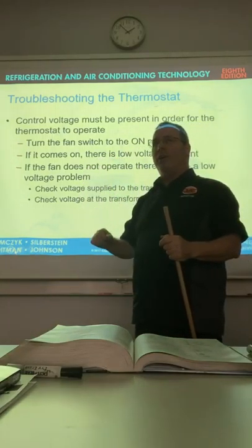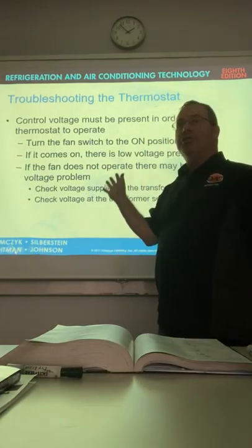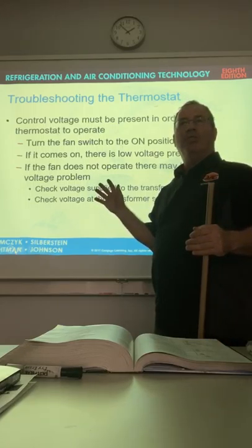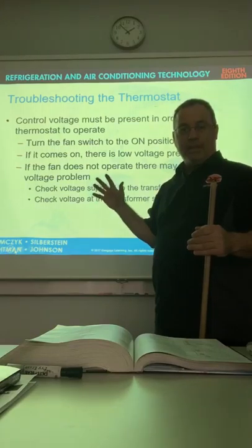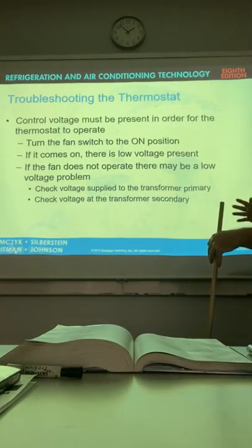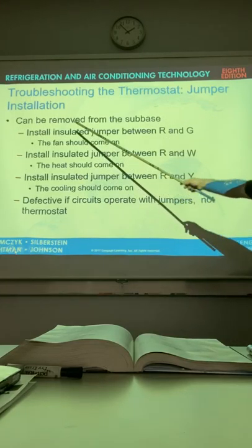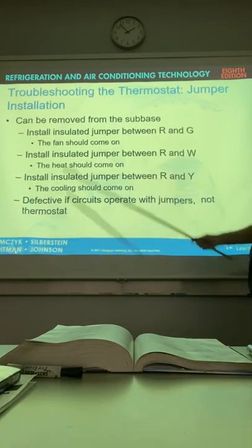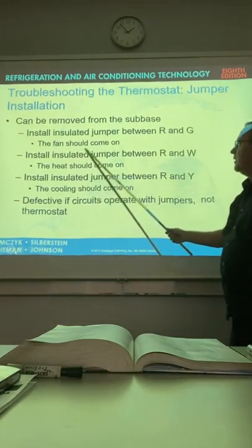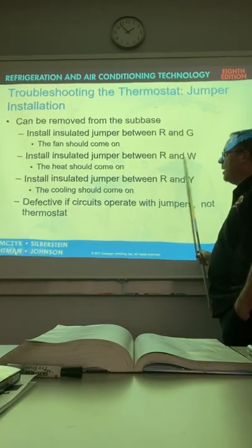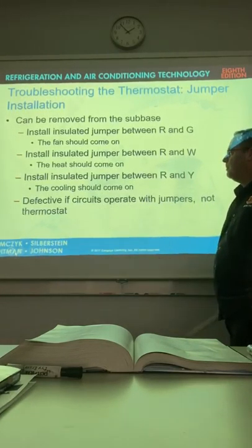Control voltage must be present in order for the thermostat to operate. Turn the switch to on. If it comes on, the low voltage is there. So, any time you walk in the house and you turn the thermostat on and you hear the blower come on, you've just eliminated the whole concern of not having low voltage. That's all working. If the fan does not operate, it may be a low voltage problem. Check voltage to the transformer.